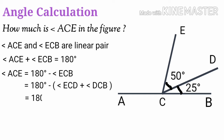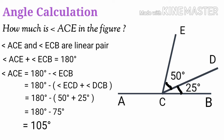That is 180 degrees minus 50 plus 25, which is 180 degrees minus 75. That is equal to 105 degrees.